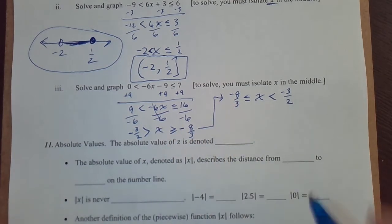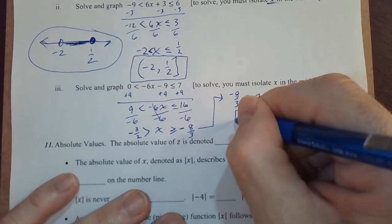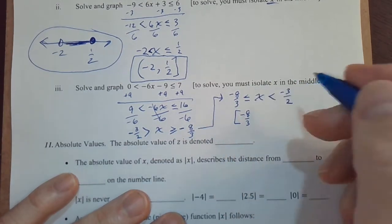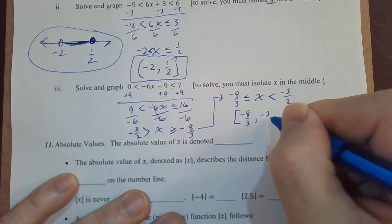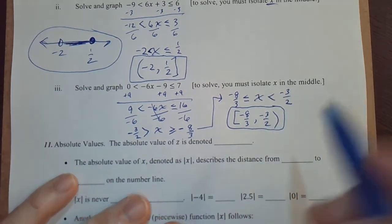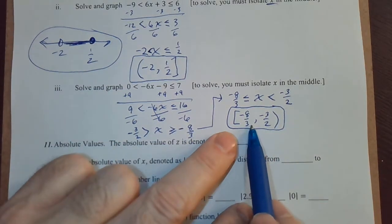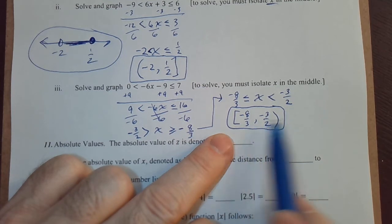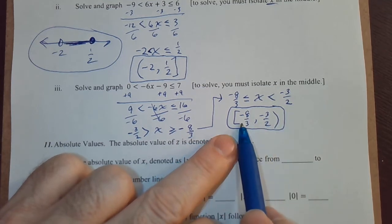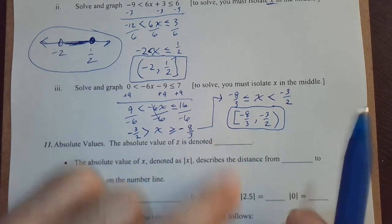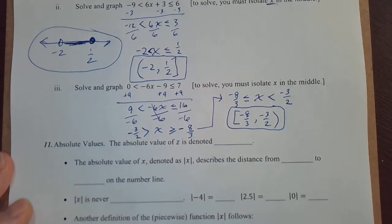Now we can write it like an interval. Negative 8 over 3 with a square bracket, comma negative 3 over 2 with a rounded bracket. And I'll let you write down on the number line the solution. Just draw the number line, draw this number, draw this number to the right, shade everything in between. Put a closed circle on this one, an open circle on this one.